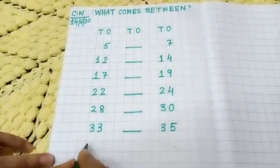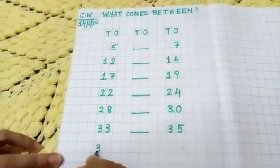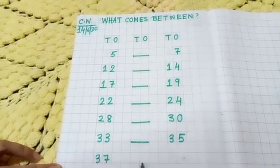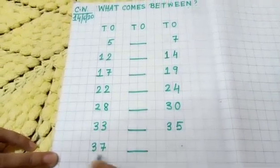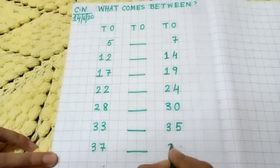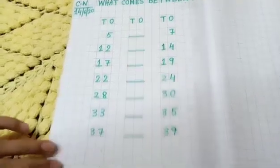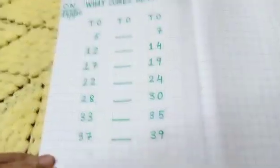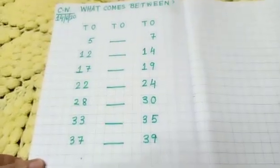Last one more. Ok children. Thirty-seven. Dash. Thirty-nine. Everybody written. Ok children.